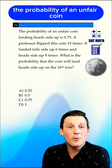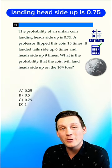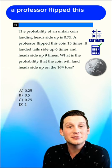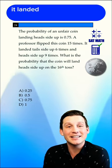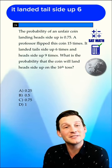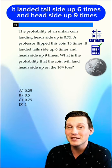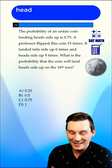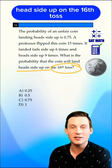The probability of an unfair coin landing head side up is 0.75. A professor flipped this coin 15 times. It landed tail side up six times and head side up nine times. What is the probability the coin will land head side up on the 16th toss?